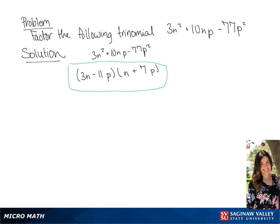And as you see, if we multiply this out, we have negative 11np. And if we multiply 3n and 7p, we get 21np. And if we add these together, we get 10np, which is the middle part of our trinomial.